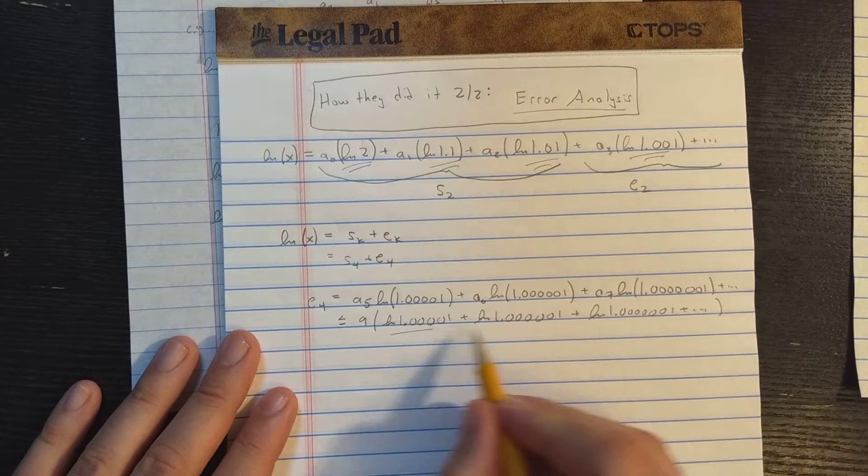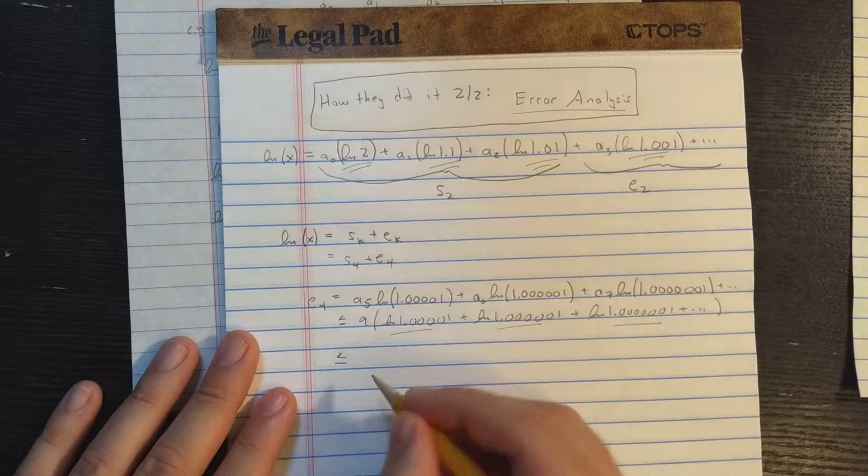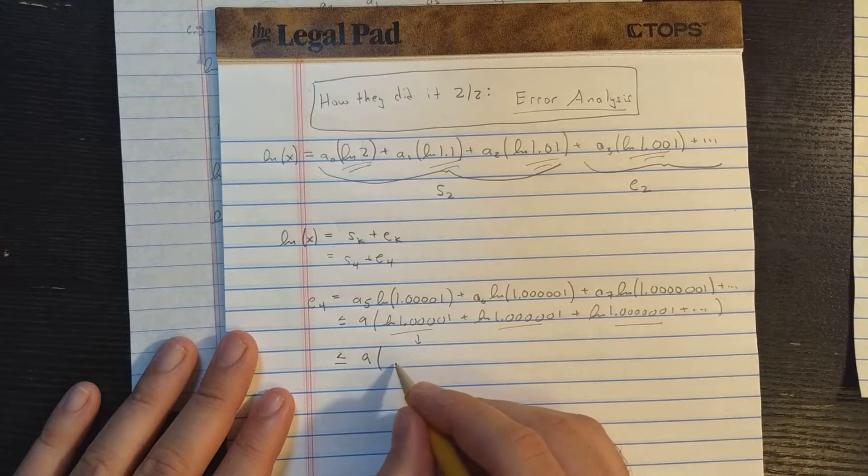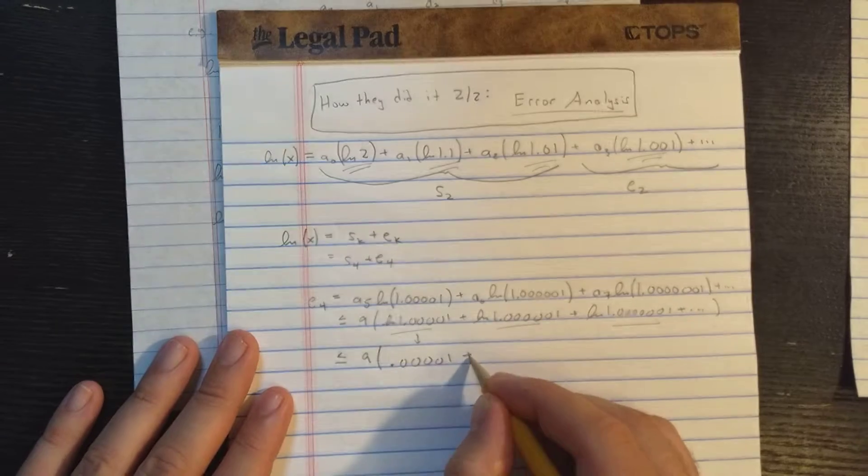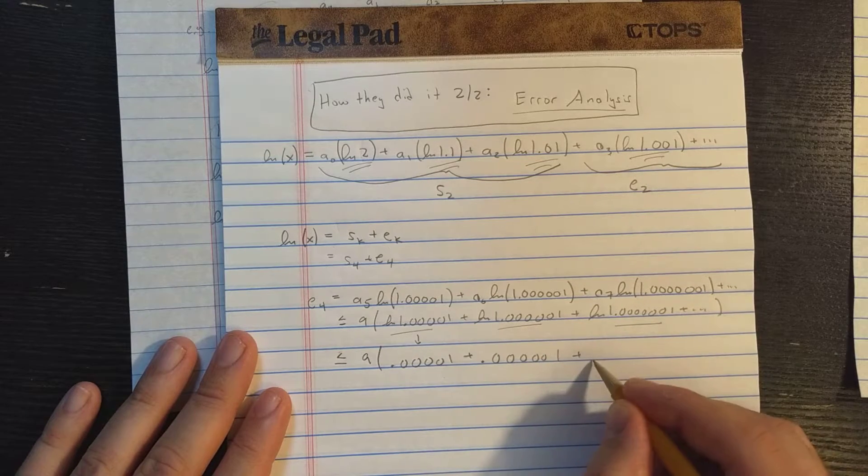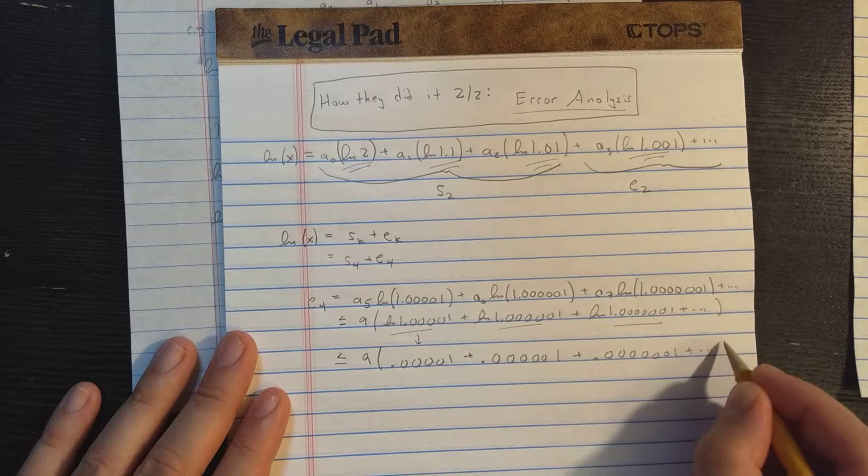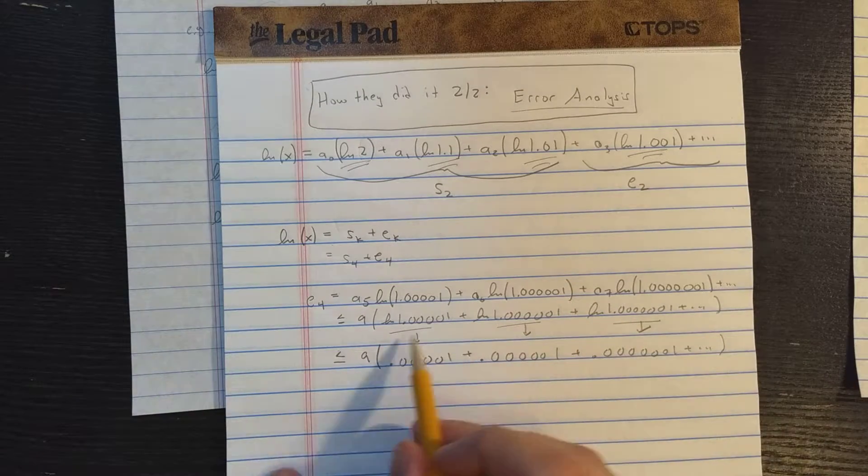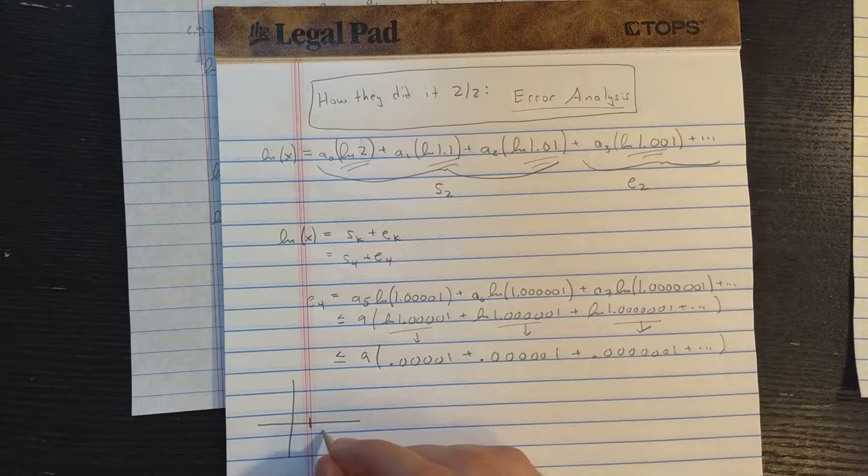The second trick is what to do with each of these terms. And the idea is that each of those, I'll write it, and then we'll explain why. This is less or equal to 0.000001, this one 0.000001, this one 0.000001, and so on. In other words, I've just dropped the 1. What's going on there is a common approximation for the natural log.